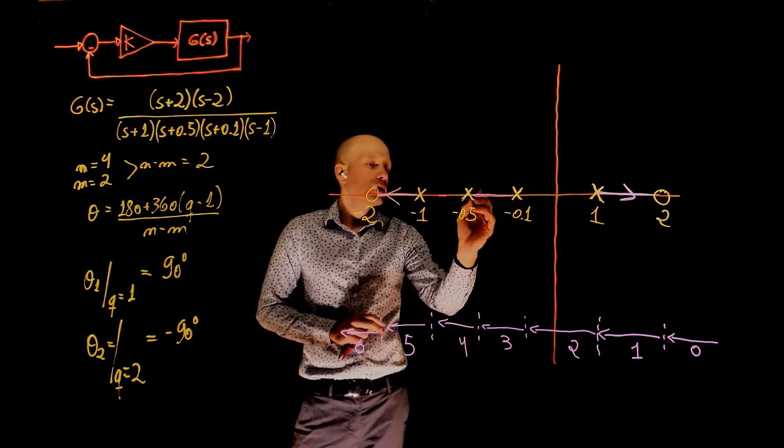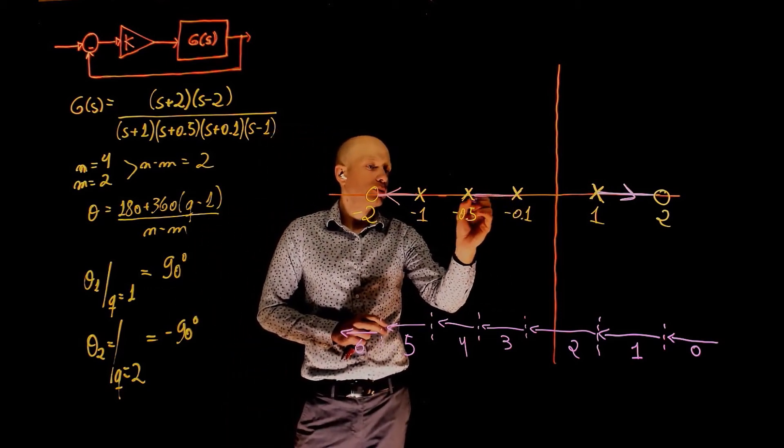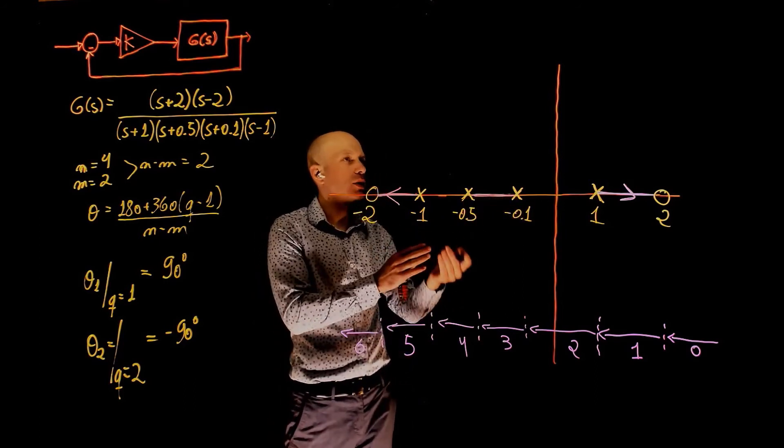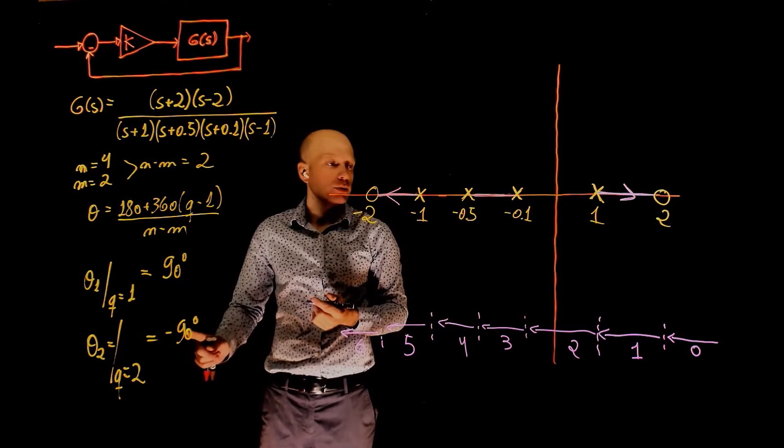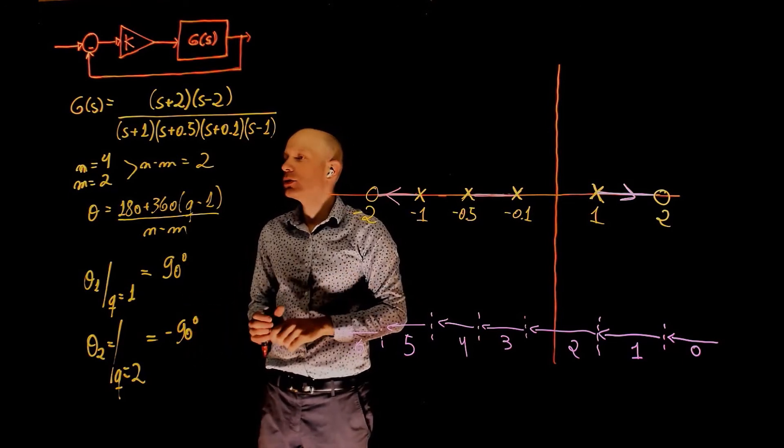We still have to deal with this case here because we have two poles. The two poles cannot go to each other. They will have to come together and break to infinity. They do that following these asymptotes. Now let's see where this asymptote is located.